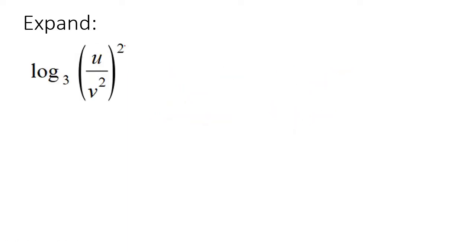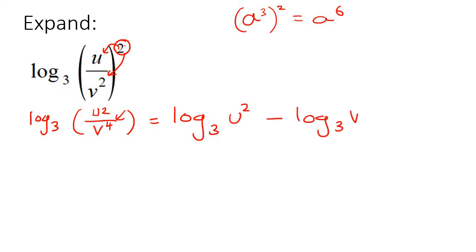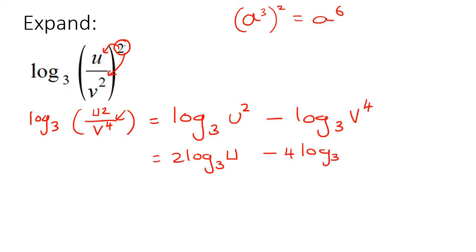With this one, I would first put the 2 inside each of those. That becomes log₃(u²/v⁴), because the exponent rule says if you have a³ to the power of 2, it becomes a⁶ since you multiply. Now we can realize there is a divide, so that means minus. It becomes log₃(u²) minus log₃(v⁴). Both have three parts, so the exponents go to the front: 2·log₃(u) minus 4·log₃(v).